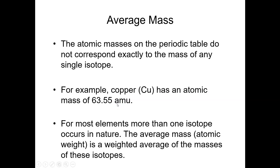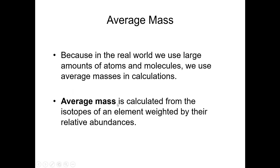Before we talk about what we mean by a weighted average, let me explain why we want to use these weighted averages — the average mass of a copper atom or a helium atom or a carbon atom — rather than the mass of any one particular isotope. In the real world, if we're going to weigh out some quantity of a particular element, we're going to use large, large amounts of atoms and molecules. Just gram quantities of something contain huge numbers of atoms. Avogadro's numbers are sometimes even larger. That means you're just going to have a mixture of every isotope of that atom, according to its natural abundance. So you can't weigh out by the mass of only one isotope, because you've got all the isotopes mixed together in that sample.